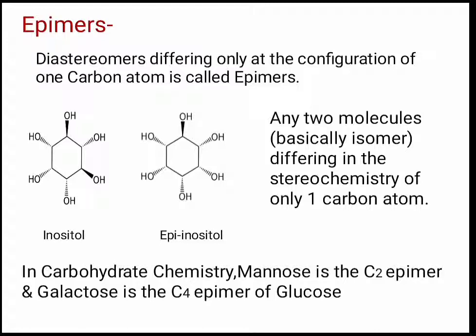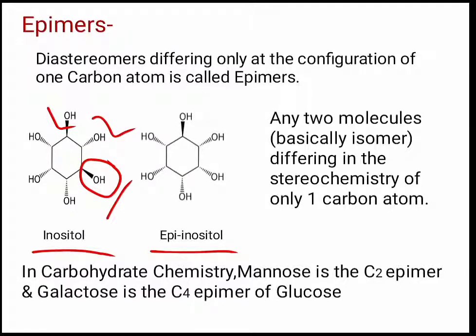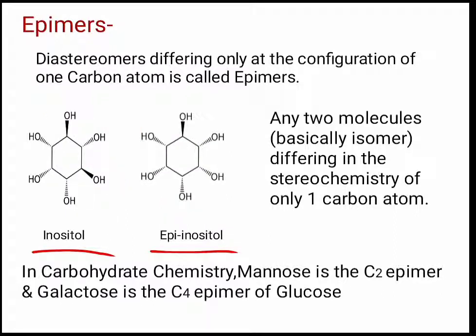Any two molecules differing in the stereochemistry of only one carbon atom are epimers. Now see the structure of inositol and epinositol. Starting from carbon one, the OH group of the third carbon atom is in the back in epinositol, whereas in inositol it was in the front. There is only a difference in the configuration of one carbon atom, that's why these are epimers.